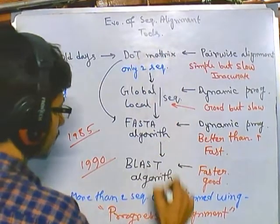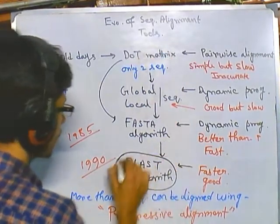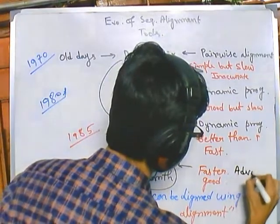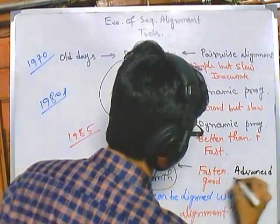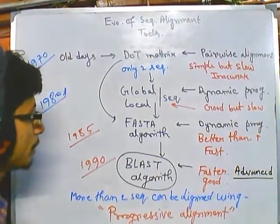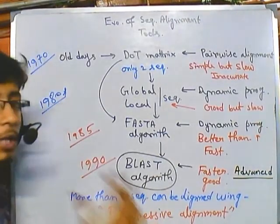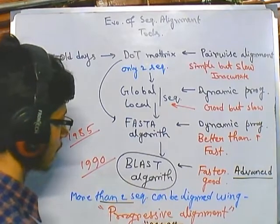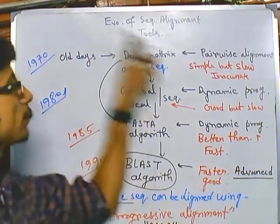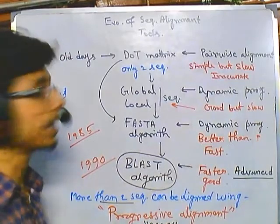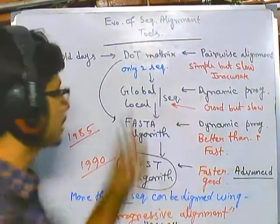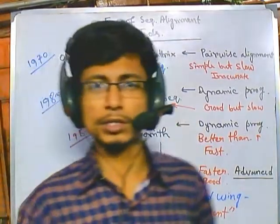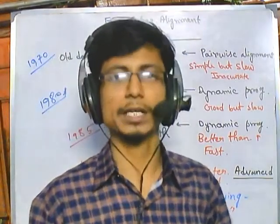From dot matrix we progressed towards BLAST, which is the most advanced sequence alignment tool. Progressive alignment is used to compare more than two sequences and is part of multiple sequence alignment tools. This is all about the evolution of sequence alignment and bioinformatics tools, and I hope that's helpful.